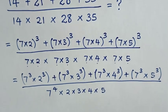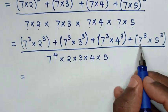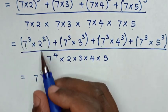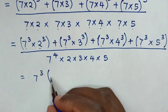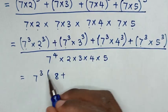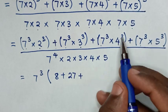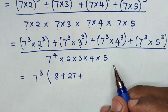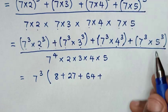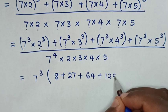In the next step, 7 power 3 is common in the numerator, so we factor it out. This gives 7 power 3 times (2 power 3 plus 3 power 3 plus 4 power 3 plus 5 power 3), where 2 power 3 is 8, 3 power 3 is 27, 4 power 3 is 64, and 5 power 3 is 125.